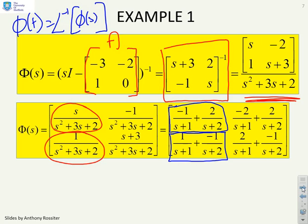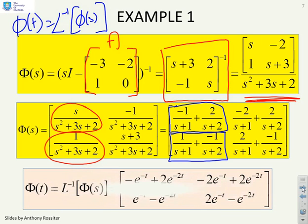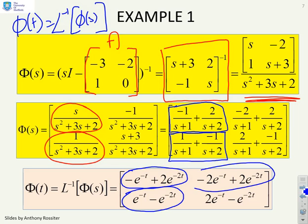Now, having done the partial fraction expansion, the inverse Laplace is by inspection. And you'll see, therefore, that phi of t has got the following values. So you'll see the (1,1): minus e to the minus t plus 2e to the minus 2t. Phi (2,1): e to the minus t minus e to the minus 2t. Phi (1,2): minus 2e to the minus t plus 2e to the minus 2t and so on.